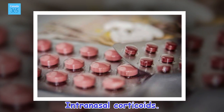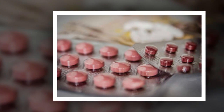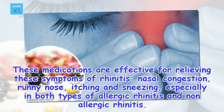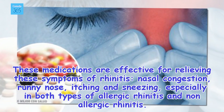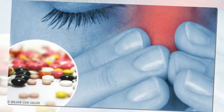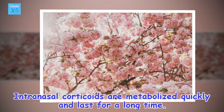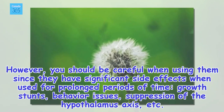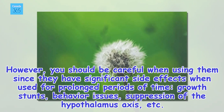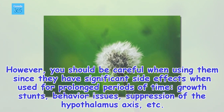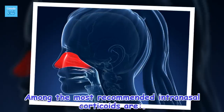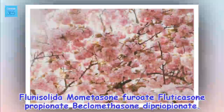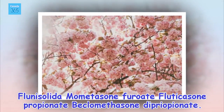Intranasal corticoids are effective for relieving symptoms of rhinitis including nasal congestion, runny nose, itching, and sneezing, especially in both types of allergic rhinitis and non-allergic rhinitis. They are metabolized quickly and last for a long time. However, you should be careful when using them since they have significant side effects when used for prolonged periods, including growth stunts, behavior issues, and suppression of the hypothalamic axis. Among the most recommended intranasal corticoids are flunisolide, mometasone furoate, fluticasone propionate, and beclomethasone dipropionate.